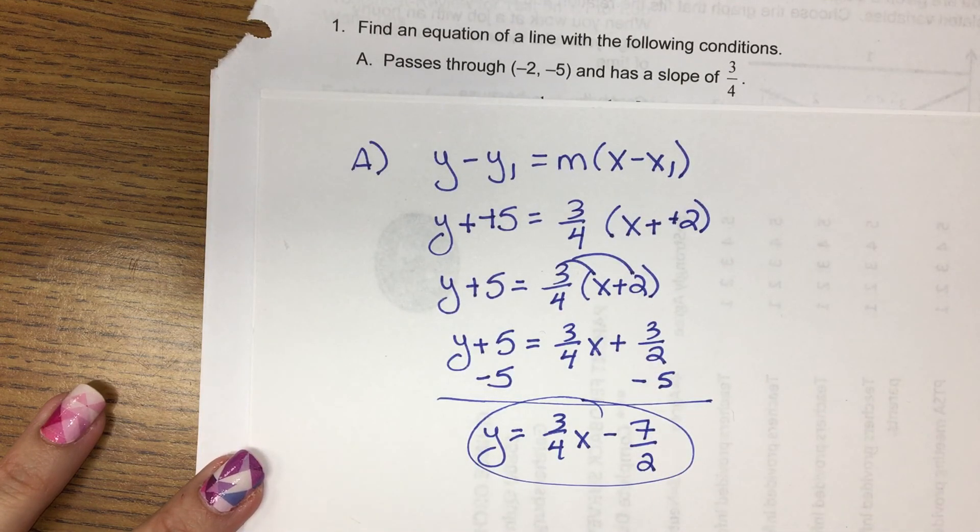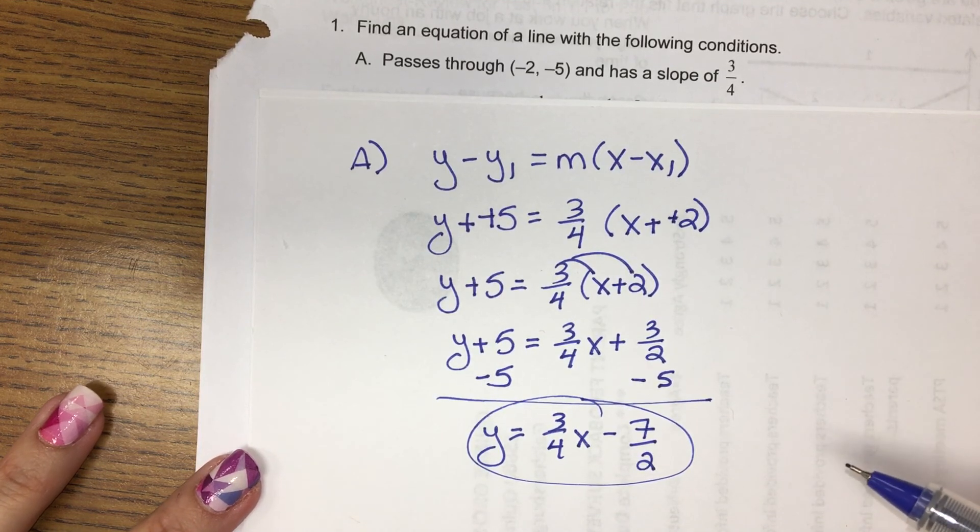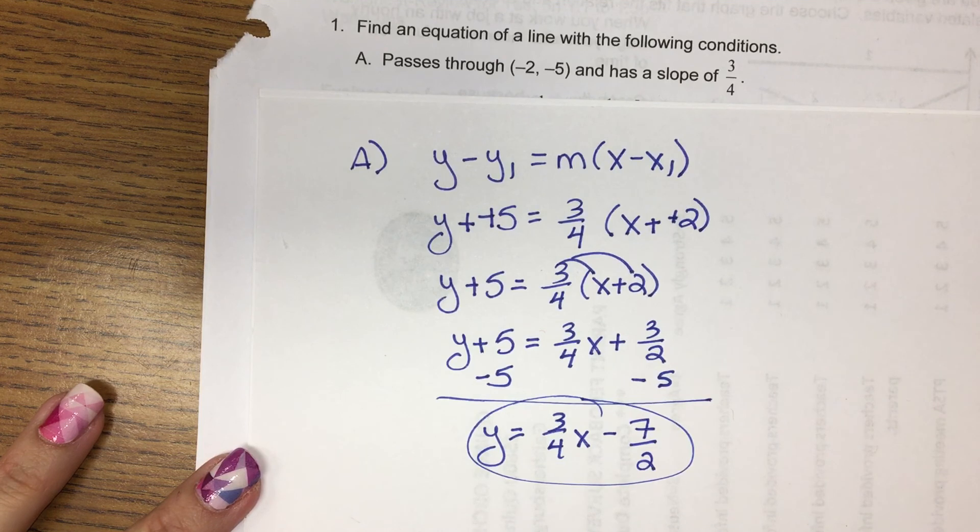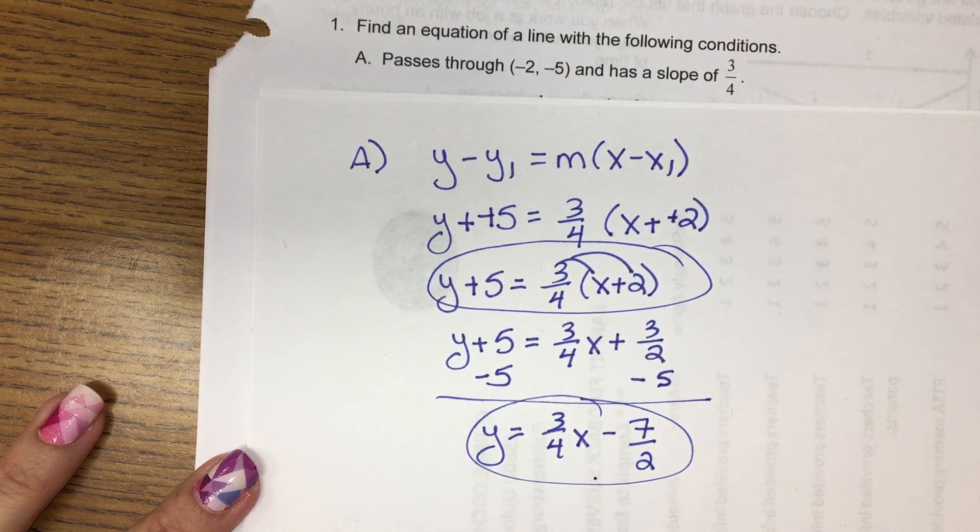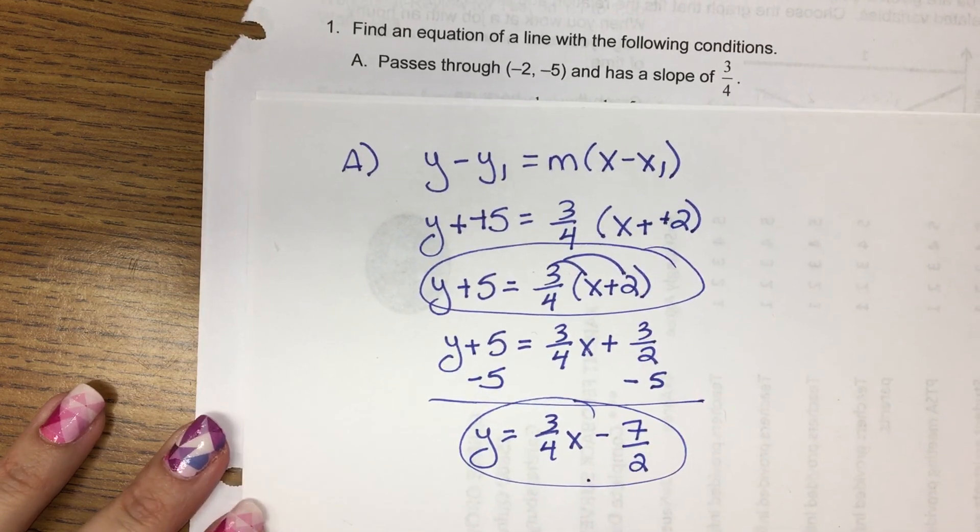So part of your test is multiple choice and part is free response. If it is free response, make sure you write your answer in the way the directions ask. If it's multiple choice, you have to match your answer. So this might be an answer choice or slope-intercept form might be an answer choice. Okay, let's do b.